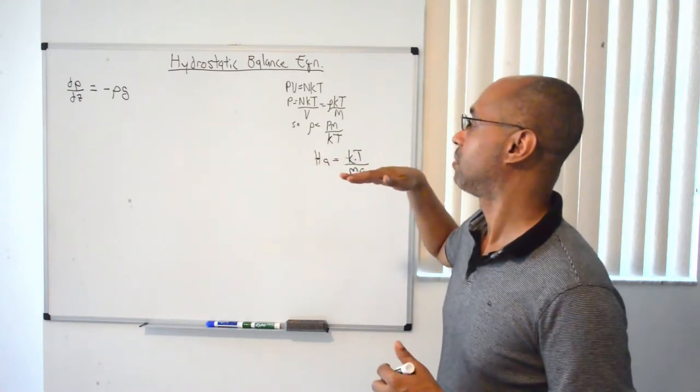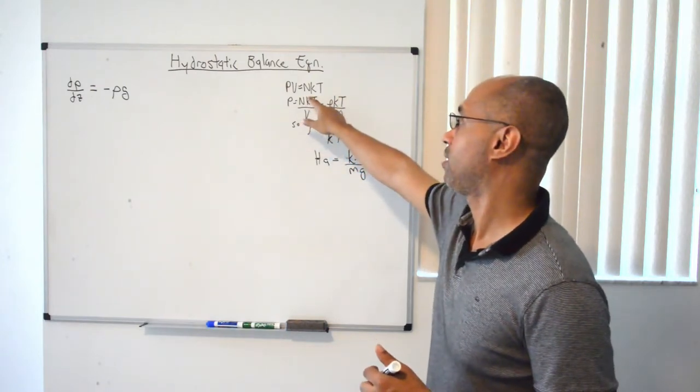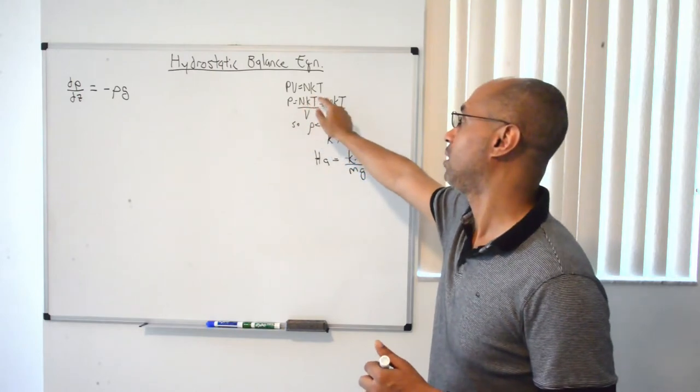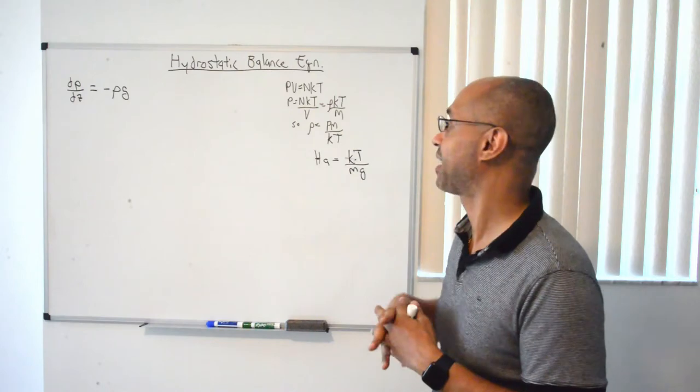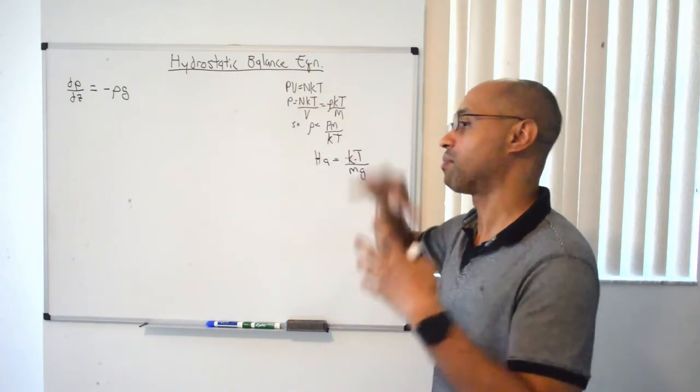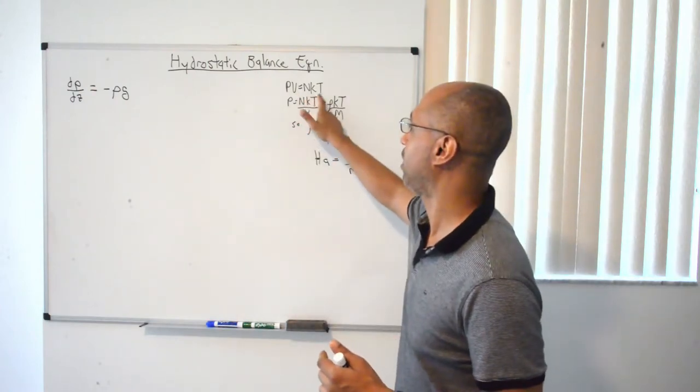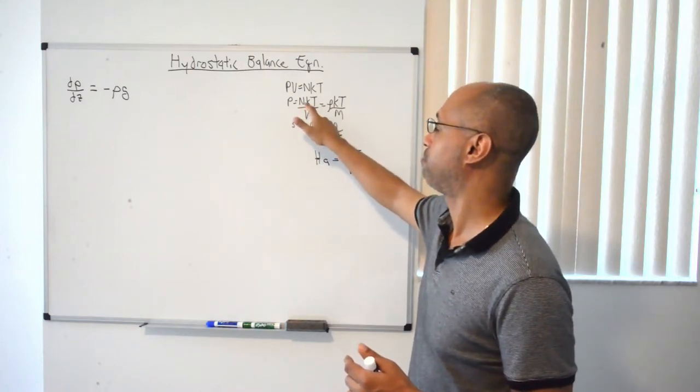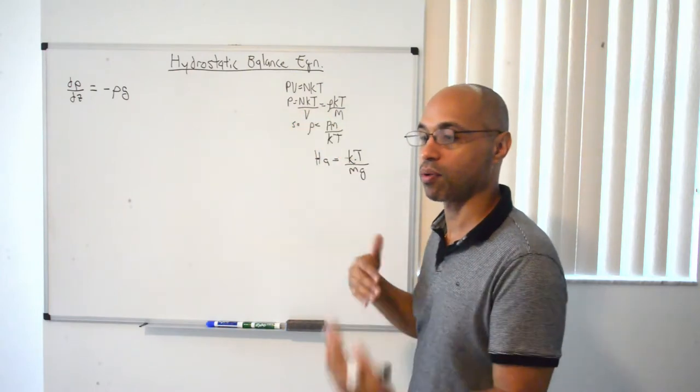But for what we would need for this derivation is to use the ideal gas law, which is what this is. This is a form of the ideal gas law, pv equals nkt. It's just another different way of writing the ideal gas law or the equation of state. This is one way of doing it. And n is like the number of particles in the atmosphere. So you can divide v on both sides and get this n over v term here.